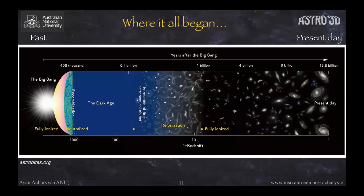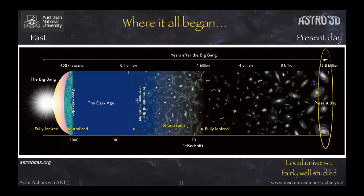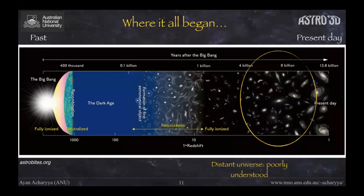We are here in the local universe, which by definition is easy to observe and has been fairly well studied. The problem lies in studying the distant universe — the high-redshift universe — because there is a lot of gray area there, and that is actually where most of the change in galaxies took place in cosmic time. Therefore we are going to focus on this distant, high-redshift universe to understand how galaxies grew and evolved.